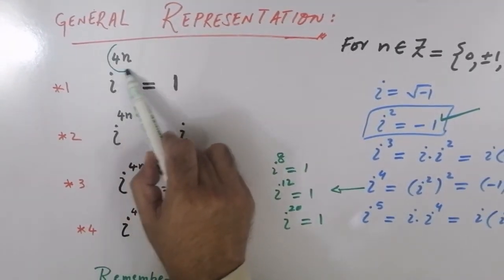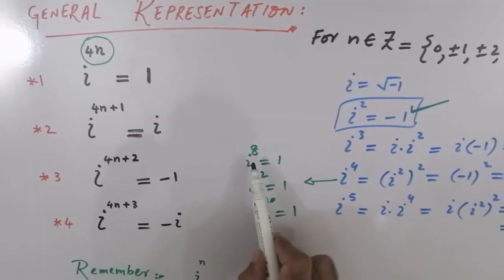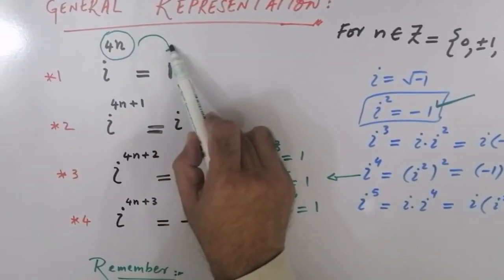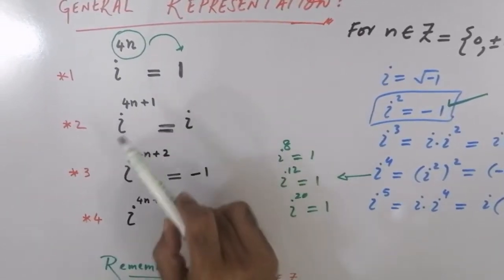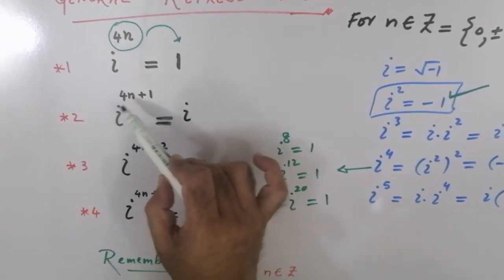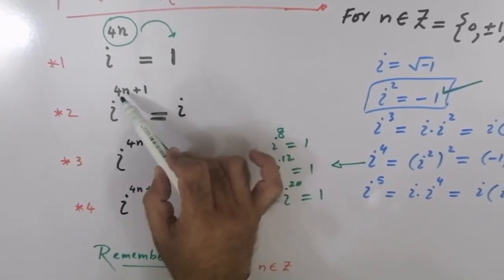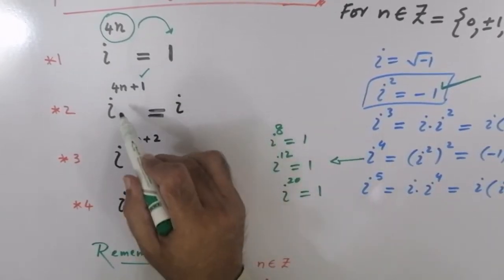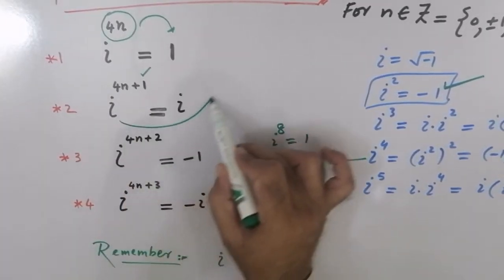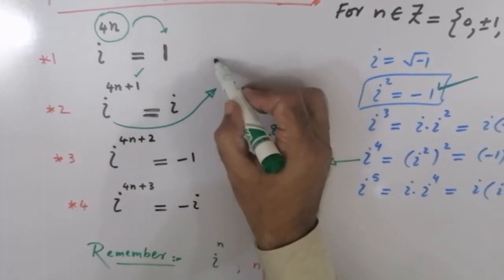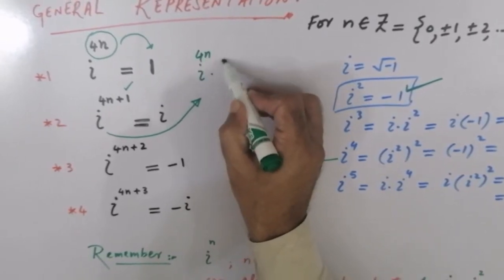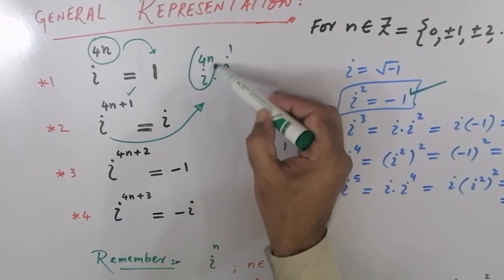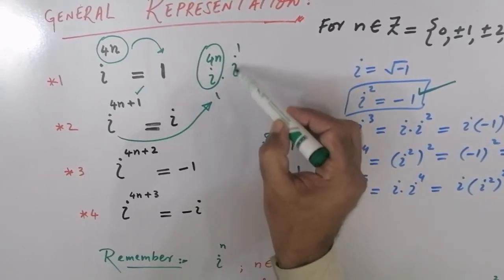IOTA کا power 4 پہ exactly divisible ہوگا — جیسے 8، 12، 20 — تو اس سے ہمیں 1 ملے گا۔ یہ بہت اہم قدم ہے۔ اب IOTA raised to power 4n plus 1: اگر IOTA کا power ہم 4 سے divide کریں اور remainder 1 آئے، تو اس کو ہم simplify کرتے ہیں IOTA raised to power 4n into IOTA raised to power 1، جس سے IOTA رہ جاتا ہے۔